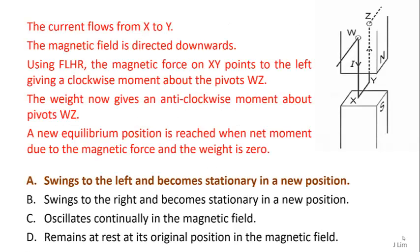The current flows from X to Y. The magnetic field is directed downwards. Using Fleming's left hand rule, the magnetic force on XY points to the left, giving a clockwise moment about the pivot WZ.